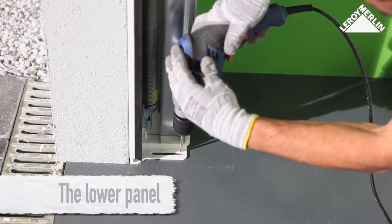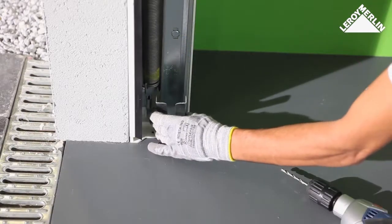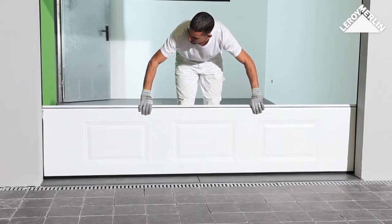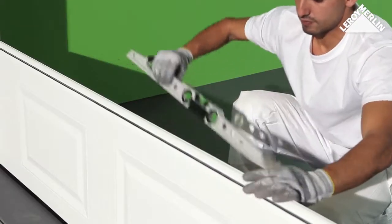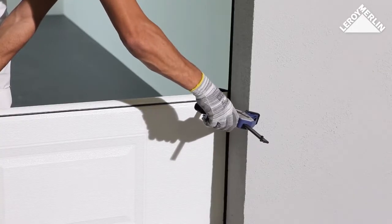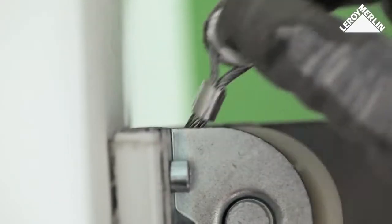The lower panel: Place the anti-intrusion device on the end of the caps. Position the first panel, center it, then check and adjust the level as necessary with a wedge, then hold it in place with a clamp.